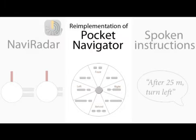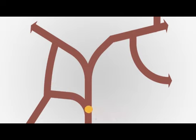Pocket Navigator also uses vibrations only. Two short pulses indicate to go straight. If the first one is longer, a turn to the left; otherwise a turn to the right is required. A longer vibration means to turn more. Three pulses indicate to turn around. When one waypoint is reached, the next is indicated.